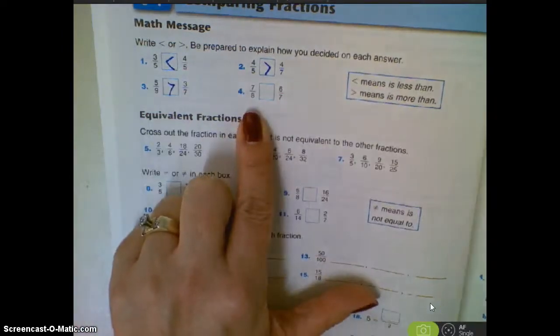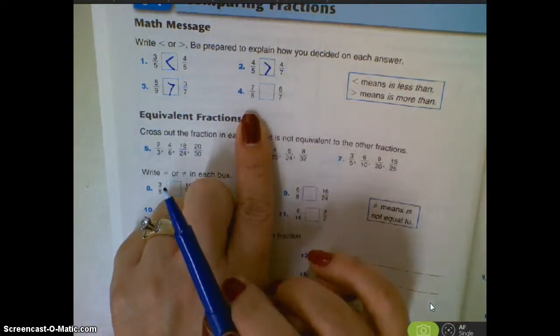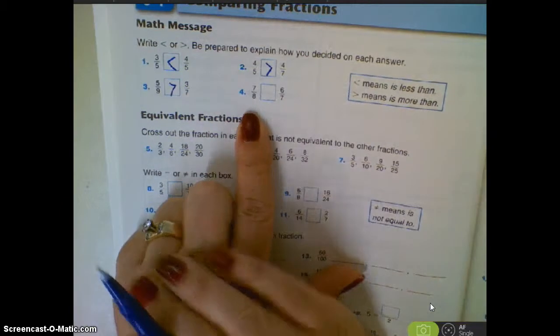This one, they're very close. Both of them are more than half. Both of them are very close, one away from equaling the bottom part, the denominator.